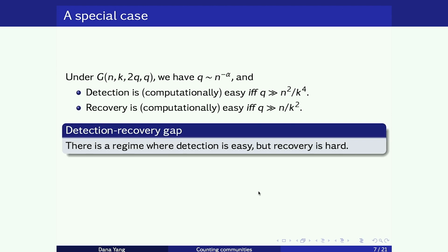If you want to do recovery within polynomial time, the least signal strength needed appears to be Q larger than N over K squared — a much stronger condition than the threshold for detection. So for the planted dense subgraph problem, we already see a gap between detection and recovery: there exists a regime where you can easily detect but cannot in polynomial time recover the members of the community.